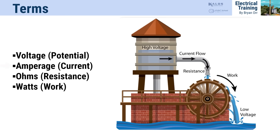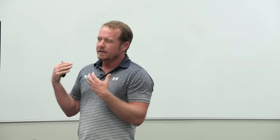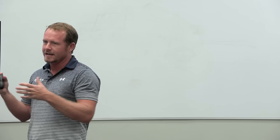Current is the actual flow—how much electricity is flowing. You'd call that gallons per minute through the pipe, your actual flow rate. Resistance, measured in ohms, is the resistance to that flow. This is where people get confused, because they confuse physical resistance with electrical resistance. I'll show you how easily this can happen.